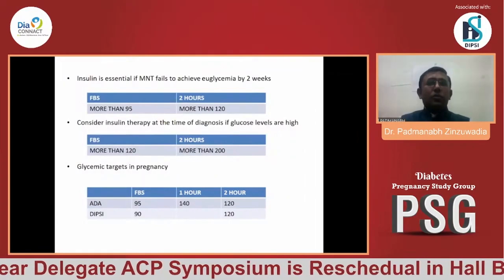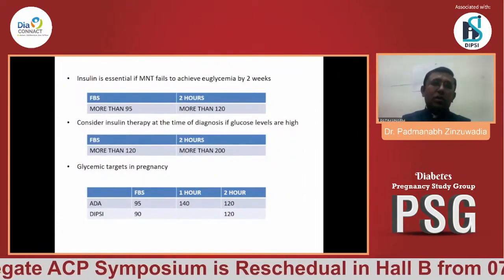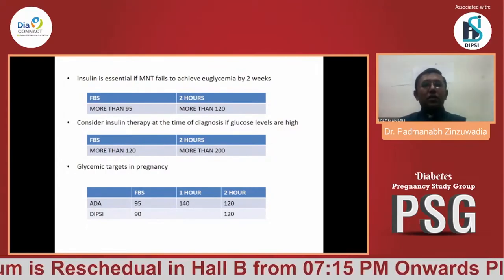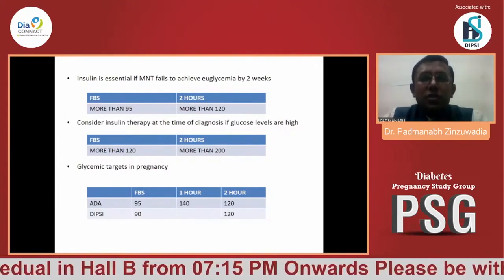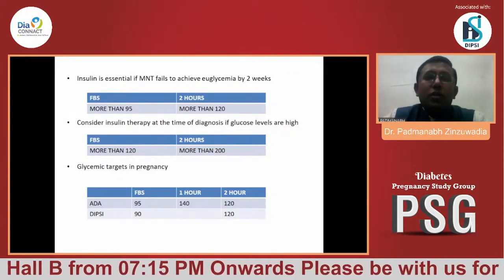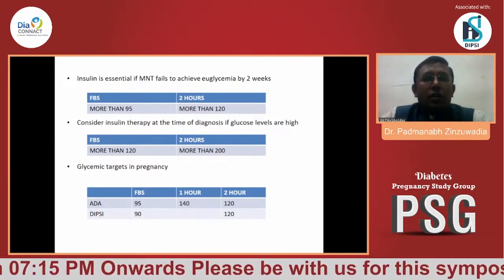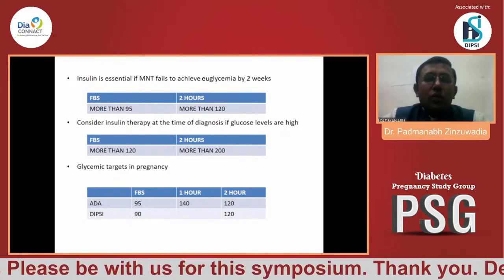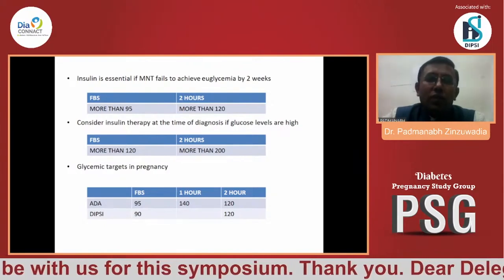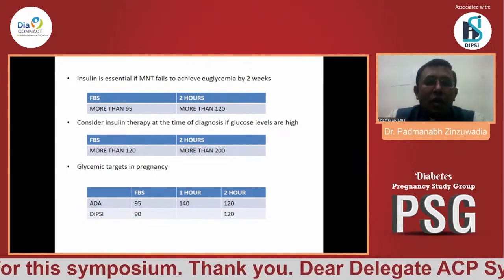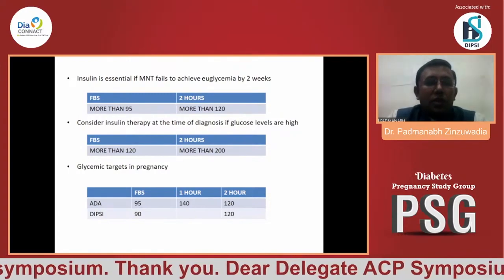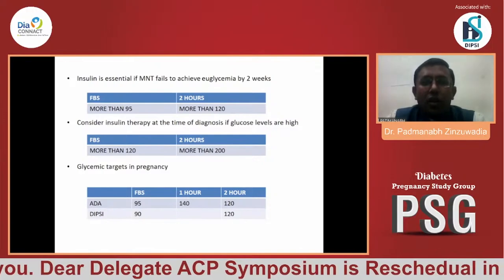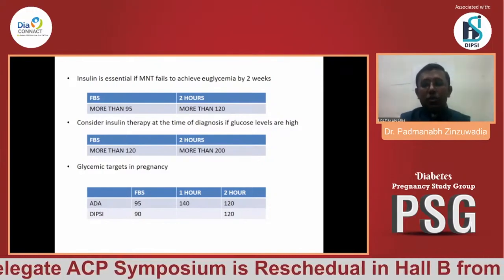If MNT fails to achieve glycemic targets, insulin is the treatment of choice. We can wait up to 2 weeks. If fasting sugar remains above 95 or 2-hour postprandial above 120 persistently, it is better to switch to insulin. If at the time of diagnosis fasting blood sugar is more than 120 or 2-hour postprandial more than 200, insulin therapy can be started straightaway. During the entire therapy, targets per DIPSI guidelines should be fasting at or below 90 and 2-hour postprandial at or below 120.